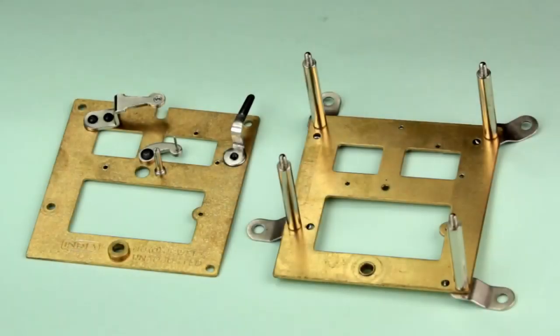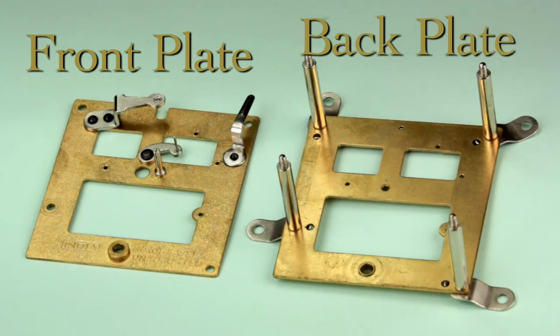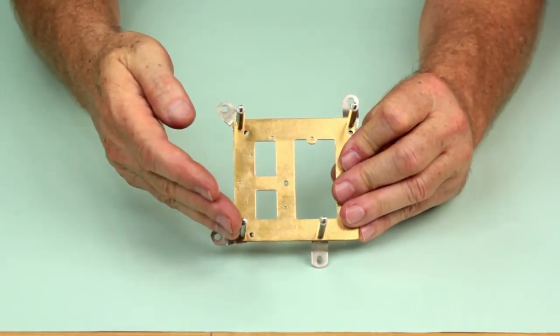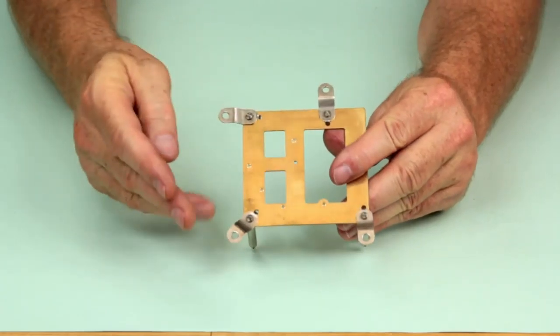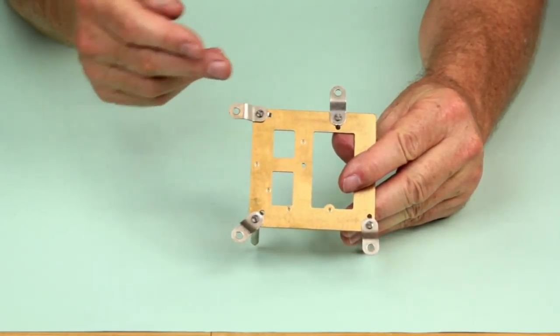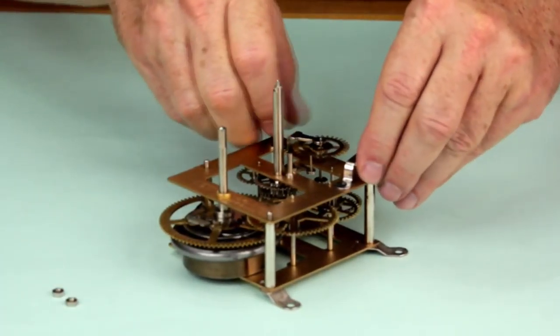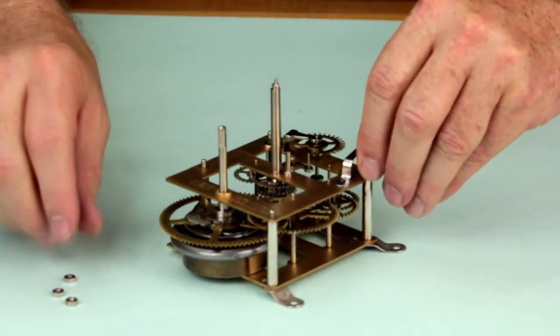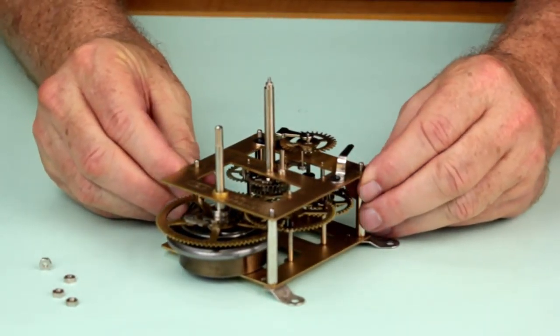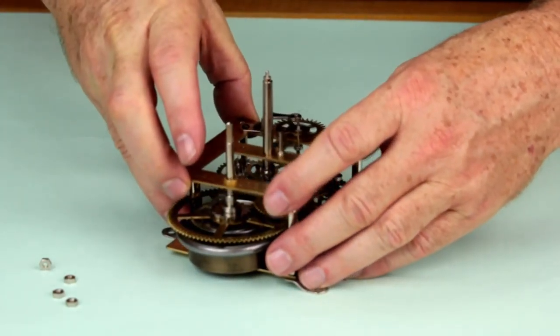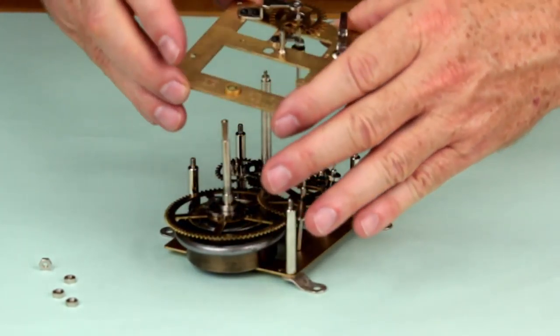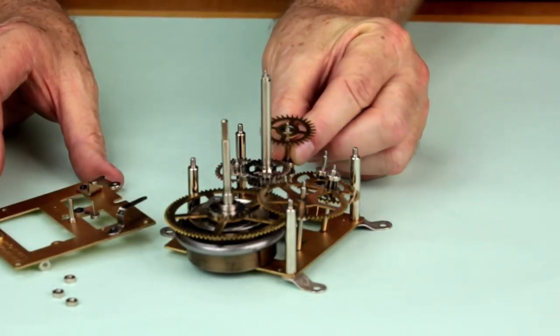The clock movement is held together by these two flat pieces of brass called plates. A clock movement must have at least two plates, but they can have more. Our time-only movement has two plates, a front plate and a back plate. The plates here are held together by these posts or pillars. These pillars are riveted to this plate. Often the pillars are riveted to one plate, with threaded nuts or taper pins holding the other plate in place, so at least one plate can be removed to service the movement. Between the plates are the gears and other parts that make up a movement.